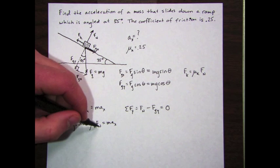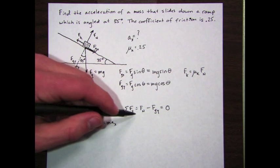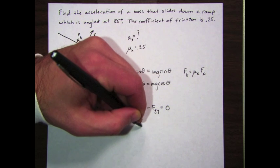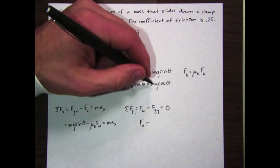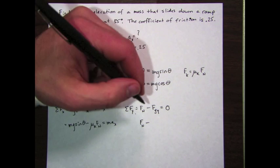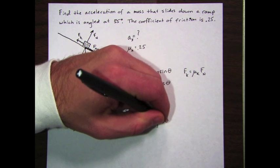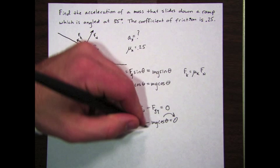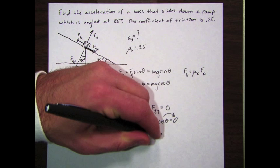I need the normal force and where can I get that? I can get it from my y variables. I'm going to rewrite this equation here. I know that f g y is equal to mg cosine theta, as I showed before.